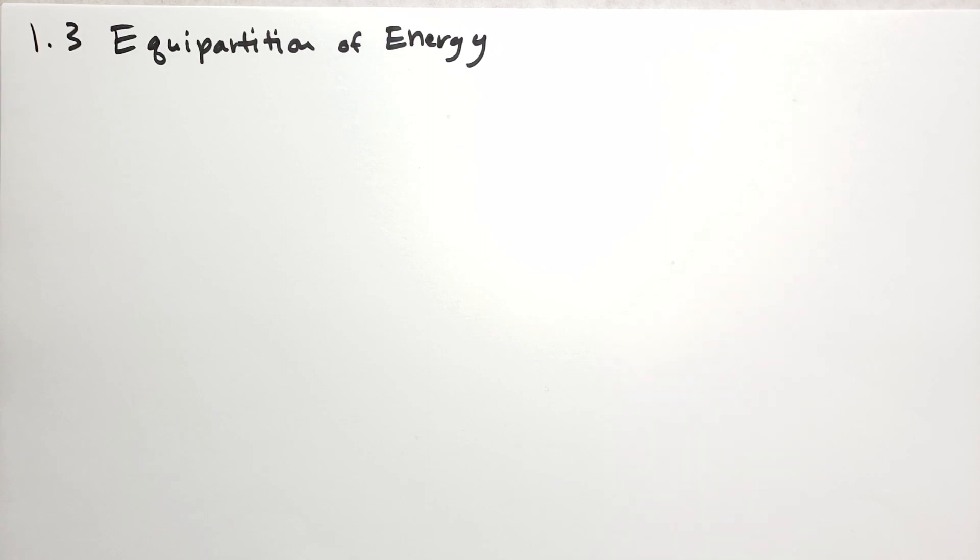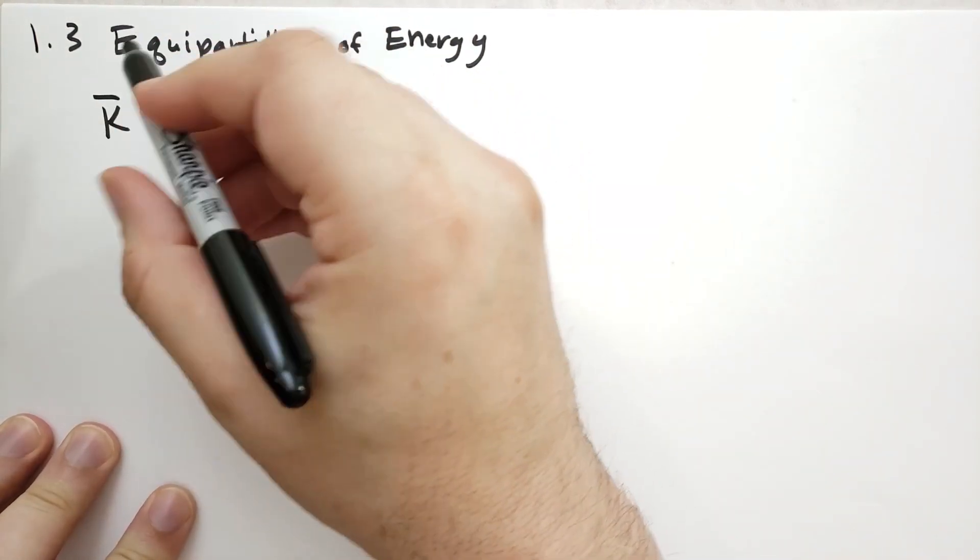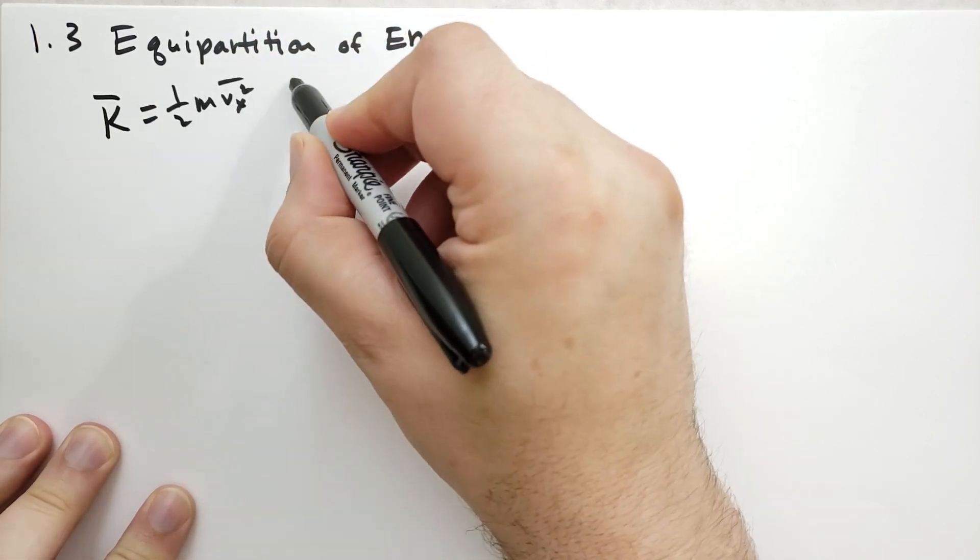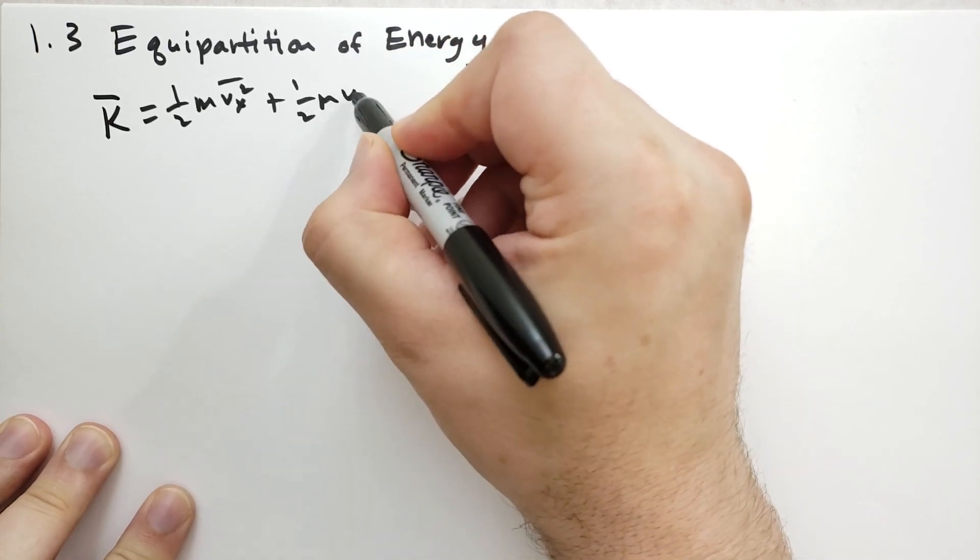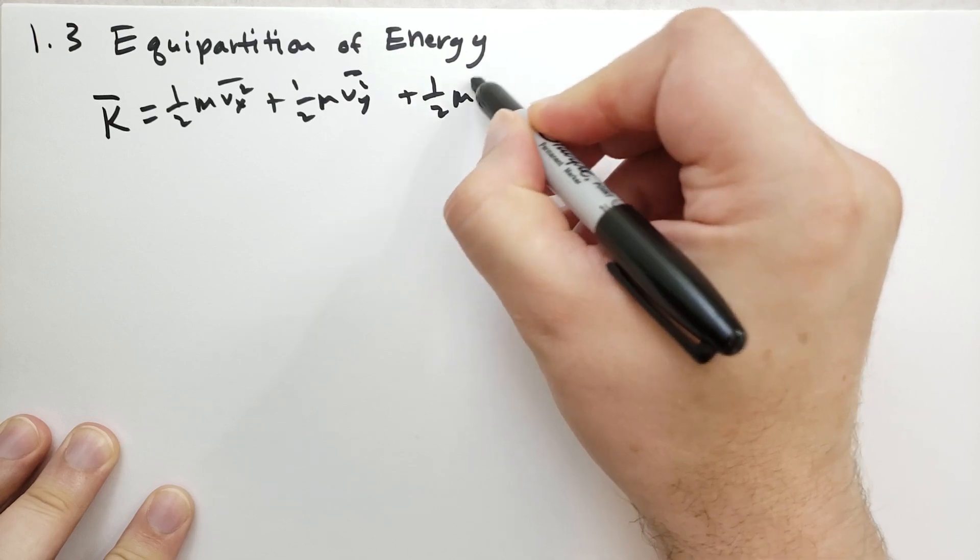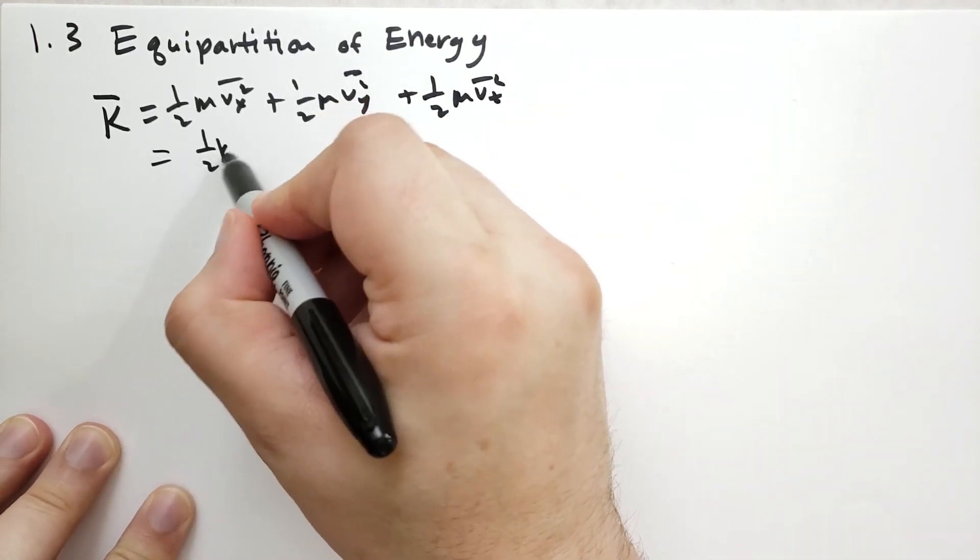So if we refer back to the last section, we had equation 1.17 that talks about how the kinetic energy, the average kinetic energy, was split up between three different axes. And so we had 1/2 m v in the x-direction squared, and that's the average. We had 1/2 m v in the y-direction squared, averaged, and then 1/2 m v in the z-direction squared, averaged. And we realize that each of these gives you 1/2 kT.